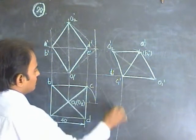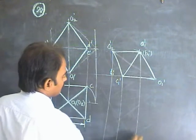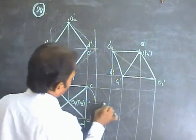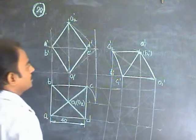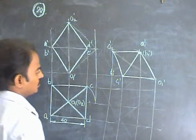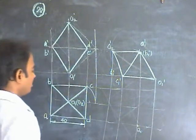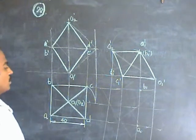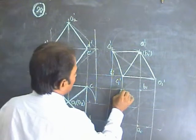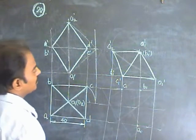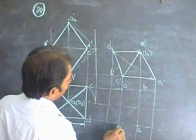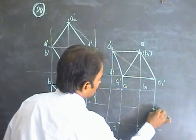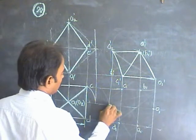Try to get the final view — project this, project this, project the other end. Here also you can take the projection. A horizontal and A vertical gives you final A1. D horizontal and D vertical gives you final B1. C horizontal and C vertical gives you final C1. D horizontal and D vertical gives you final D1. O1 horizontal and O1 vertical gives you final O1. O2 horizontal and O2 vertical gives you final O2.